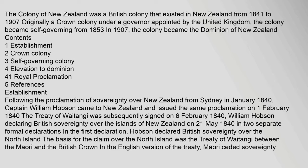The Colony of New Zealand was a British colony that existed in New Zealand from 1841 to 1907. Originally a crown colony under a governor appointed by the United Kingdom, the colony became self-governing from 1853. In 1907, the colony became the Dominion of New Zealand.